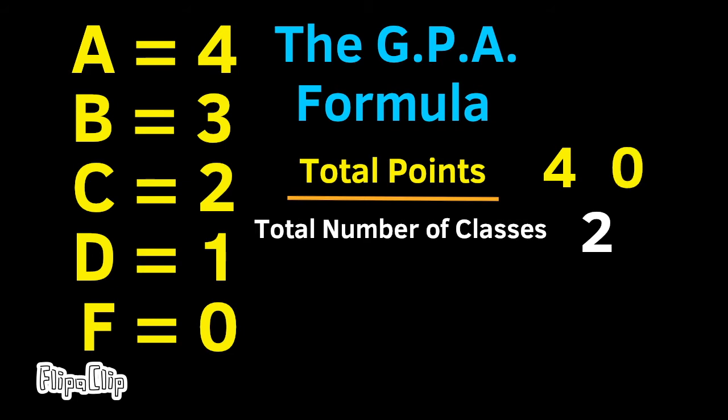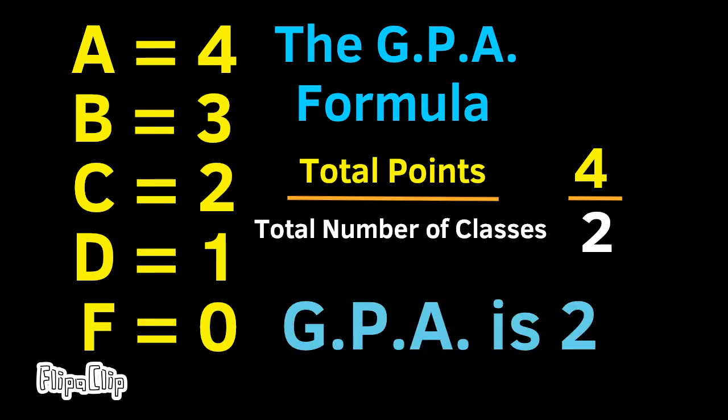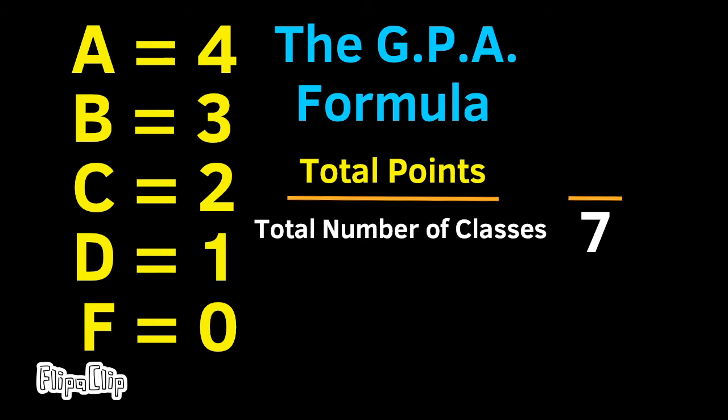and you earned 4 points and 0 points. The 4 points for earning an A, and 0 points for earning an F. 4 plus 0 equals 4. Since 4 divided by 2 equals 2, then the grade point average is 2.0.